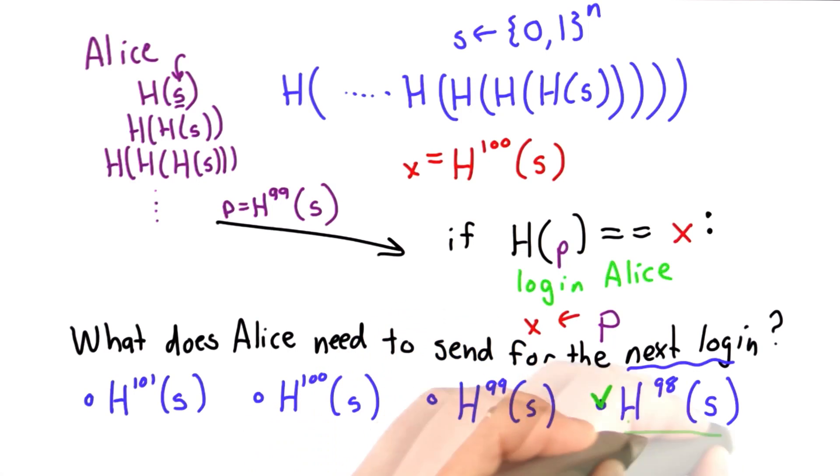The answer is Alice needs to send the value of hashing s 98 times. The hash chain is going backwards. We can only verify hashes in one direction.